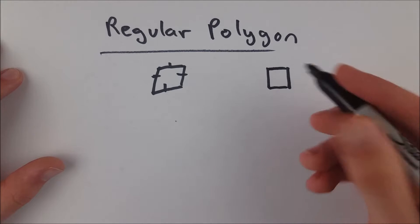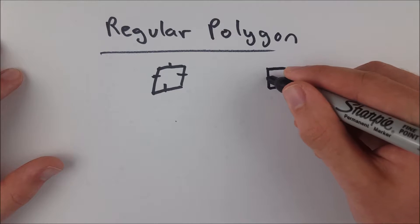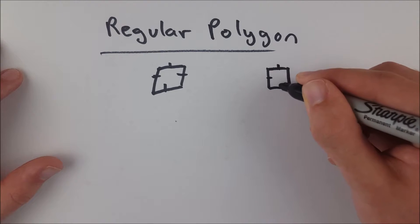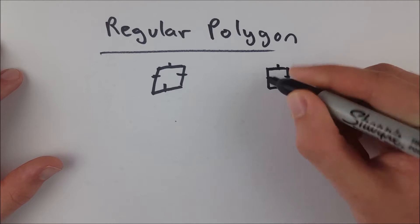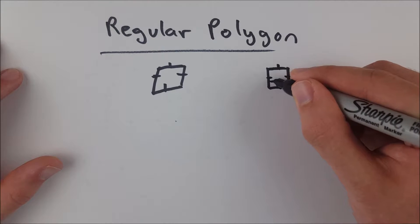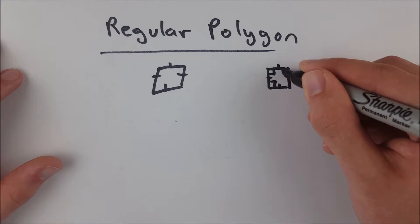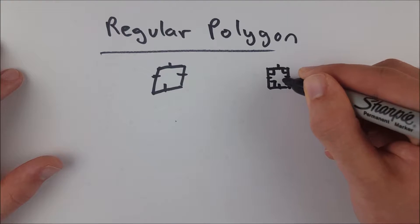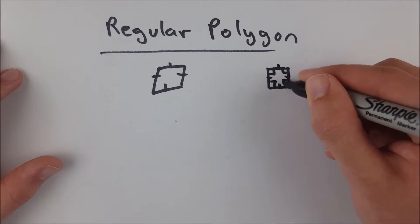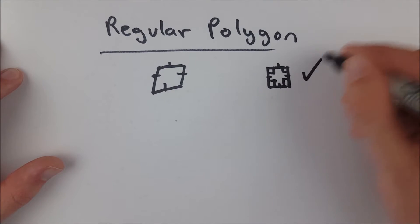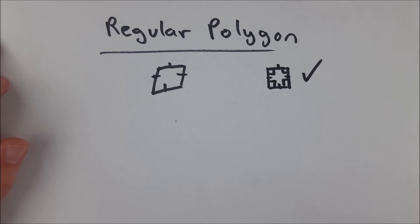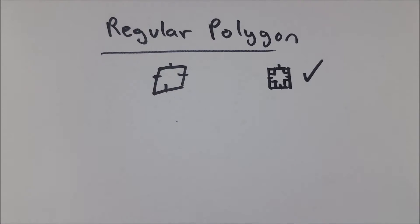But if we look at this square, all of its sides are congruent and all of its angles have a measure of 90 degrees. Therefore, this square is a regular polygon. All squares are regular polygons.